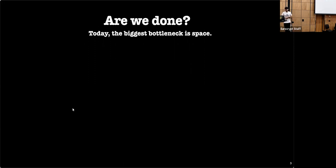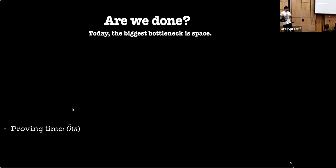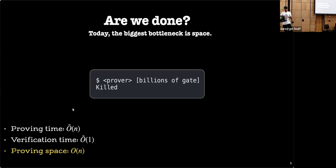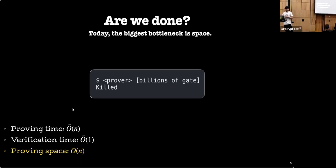SNARKs belong to this class and we've spent a lot of time improving proving time and verification time — we're nearly optimal in both. But not so much on space. If we were to use practical proof systems like Marlin or Spartan for millions of gates, they would just crash. We're not able to prove very large instances, and as we try to deploy these proof systems in the real world, the need to prove larger and larger circuits grows.